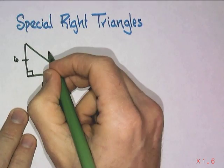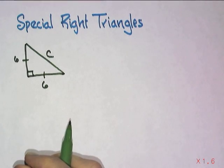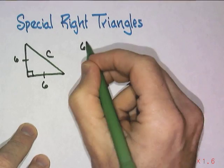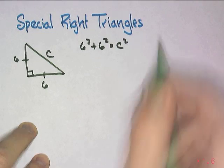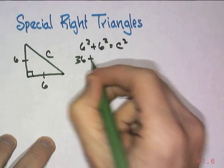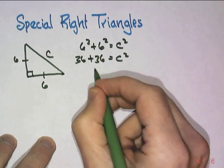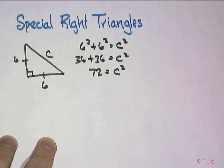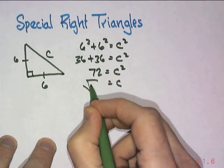And this side is our unknown. So the Pythagorean Theorem says that we can solve for the hypotenuse by squaring the two bases and adding them together. 6 squared is 36, 36 plus 36, that's 72, equals c squared. So c must be the square root of 72.